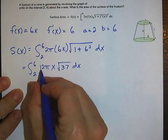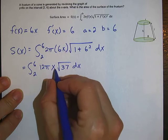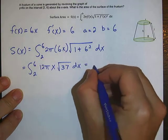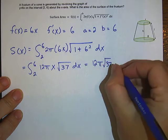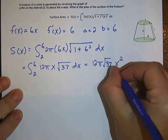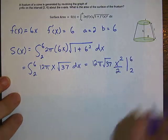Now 12 pi and square root of 37 are all constants so we're actually only taking the antiderivative of x which is x squared over 2. So let's leave the 12 pi square root of 37 out front and then write x squared over 2 and that will be from 2 to 6 will be our limits of integration.